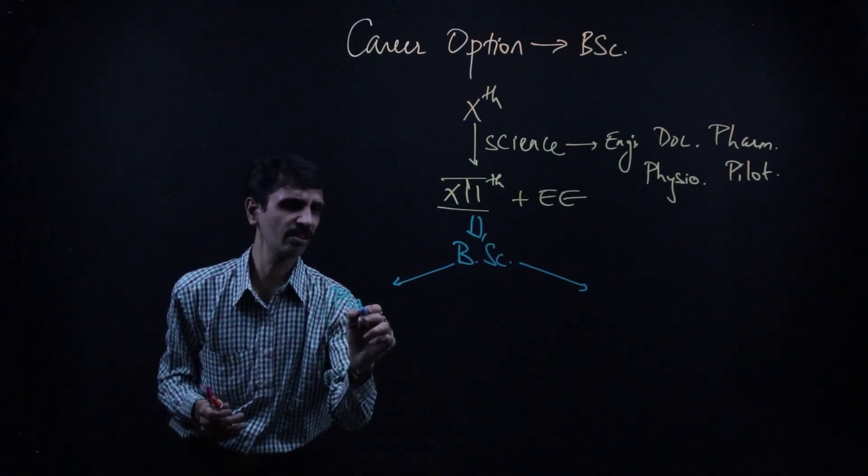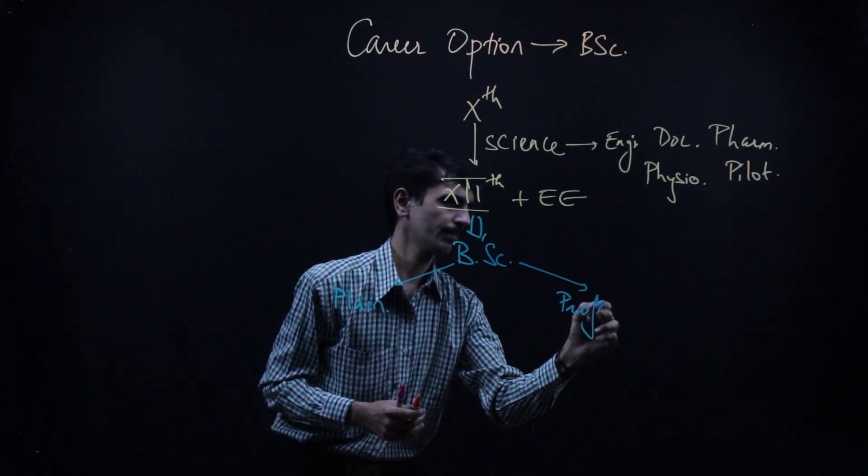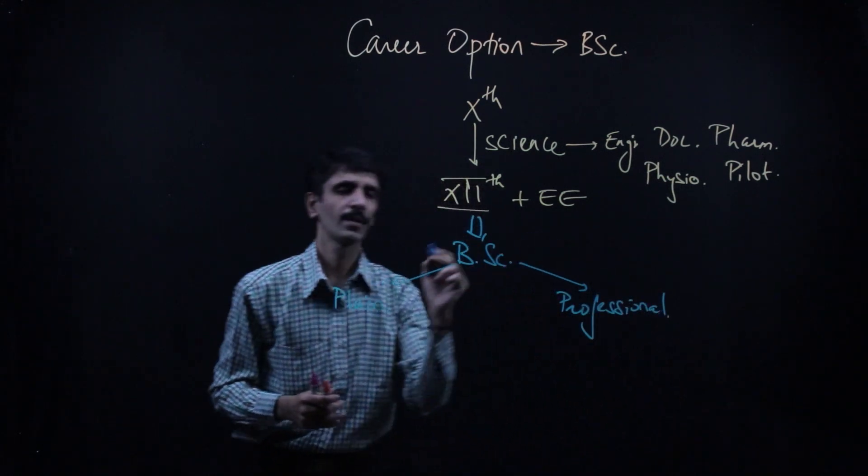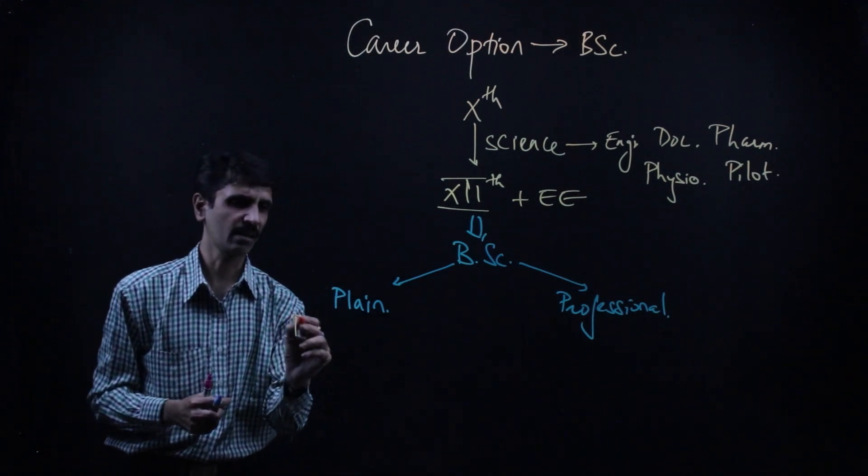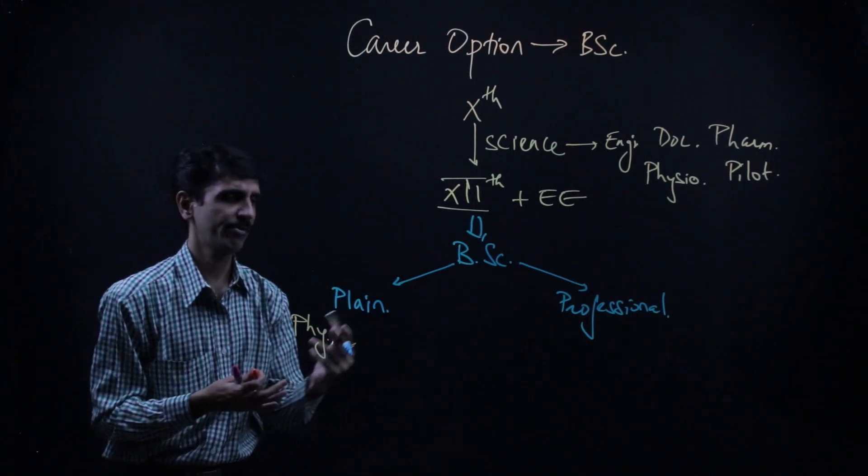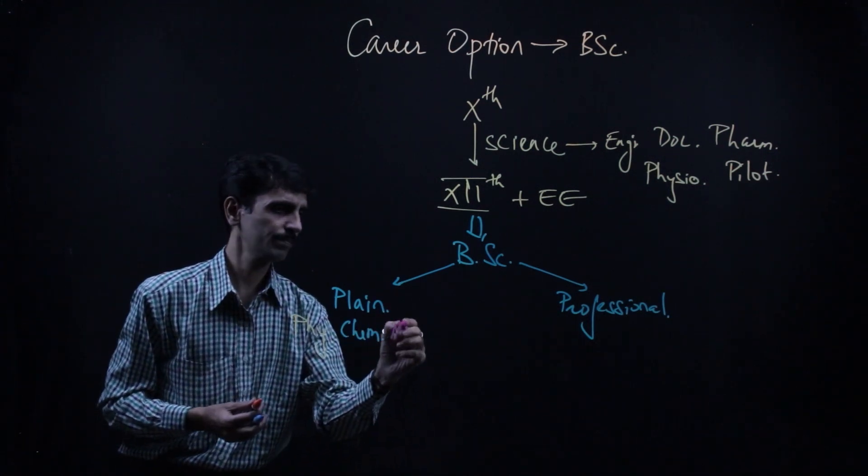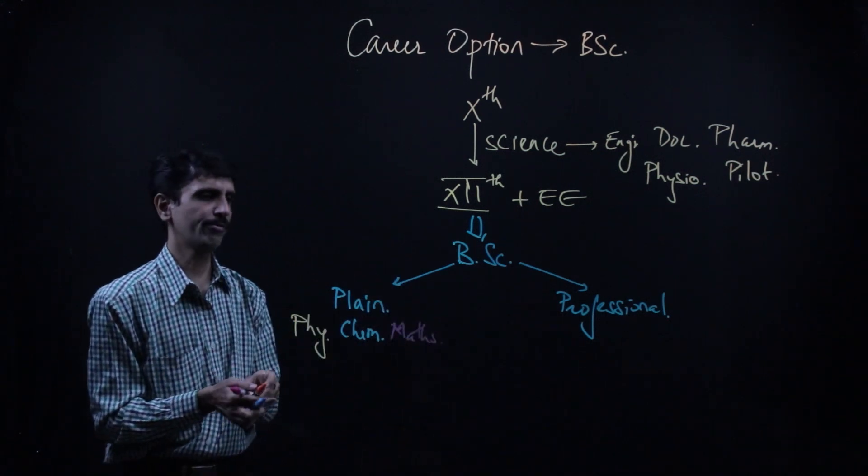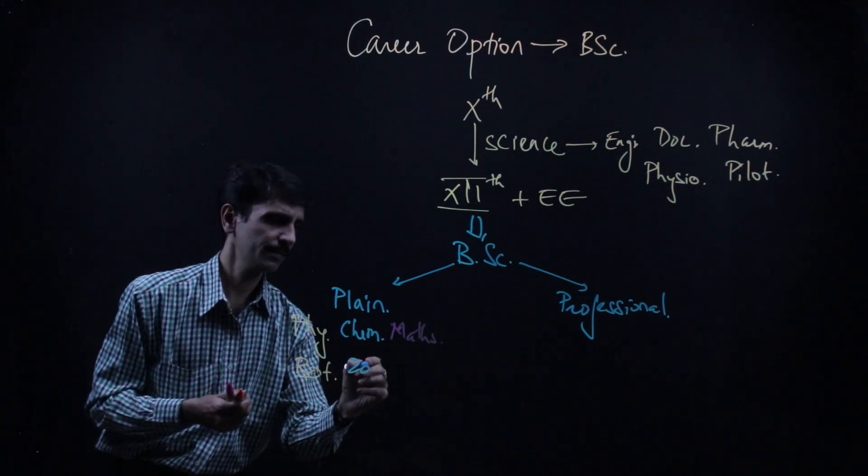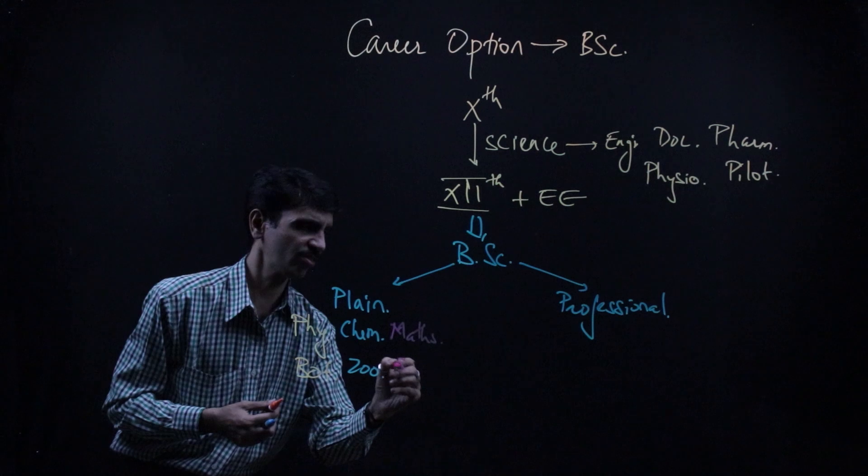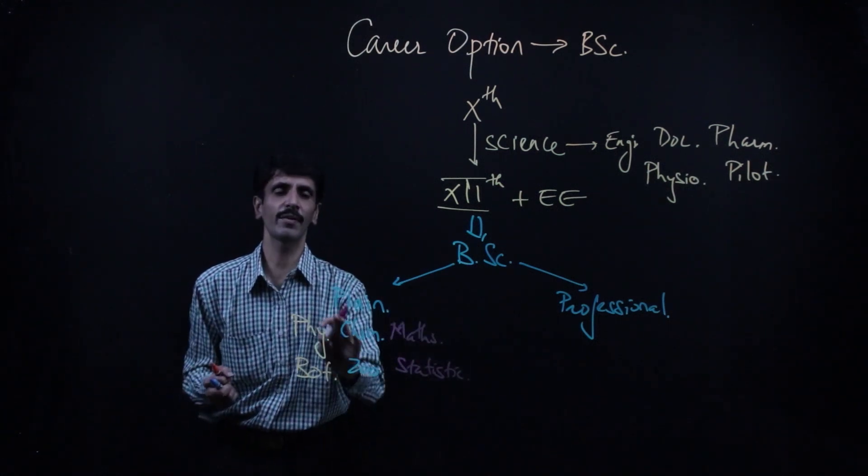One is Plain B.Sc. and the other is Professional B.Sc. The difference between the two is: when you talk about Plain B.Sc., we have subjects like Physics, Chemistry, Maths, Botany, Zoology. These are the major subjects which come out of Plain B.Sc.